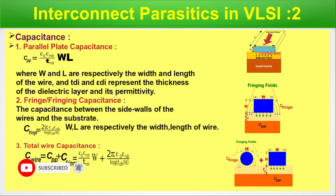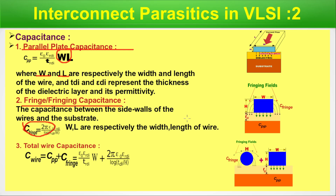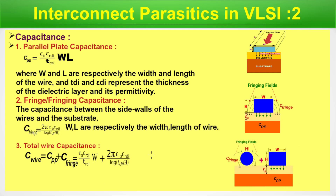For interconnect parasitics, capacitance has two types: parallel plate capacitance and fringing capacitance. For parallel plate capacitance, C is proportional to ε₀·ε_di·W·L / t_di, where W and L are the wire width and length, and t_di and ε_di represent the thickness and permittivity of the dielectric layer. Fringing capacitance is between the sidewalls of the wires and the substrate. Total wire capacitance is C_total = C_pp + C_fringe.